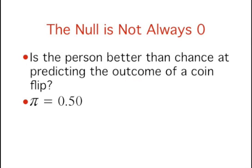Although the null hypothesis is usually that the value of a parameter is 0, there are occasions on which the null hypothesis is a value other than 0. For example, if one were testing whether a subject differed from chance and their ability to determine whether a flipped coin would come up heads or tails, the null hypothesis would be that pi equals 0.50.